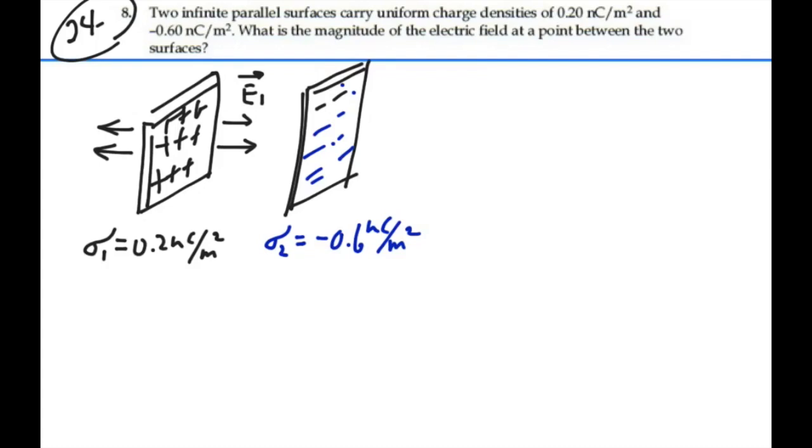For the second sheet, being negative, it's going to have a constant field as well, but the direction of that E-field is going to be going into the negative charge. So in the vicinity of this second sheet, there will be an E-field, let's call it E2, that will be terminating inward on this negative sheet of charge.